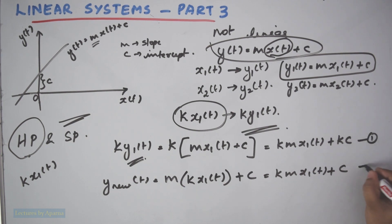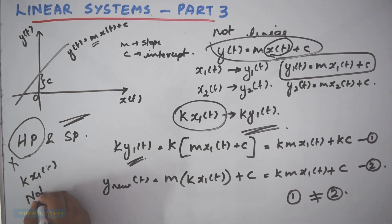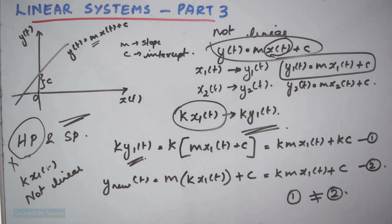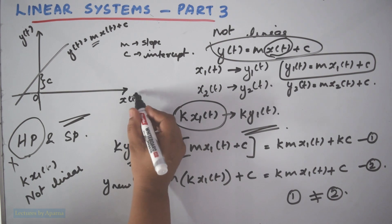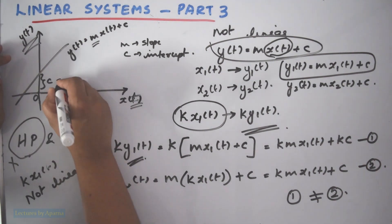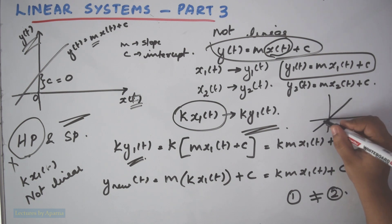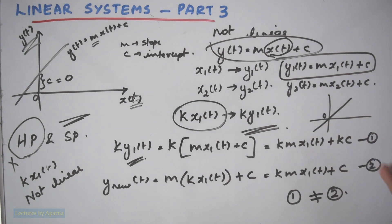So equation 1 and equation 2 — we can find that equation 1 is not equal to equation 2, which means that the homogeneity property is not satisfied, and hence this system is not linear. So even if the relation between input and output is a straight line, it need not be linear. It will be linear only if c = 0, meaning the line passes through the origin. If it has an intercept, the system will not have the linearity property.